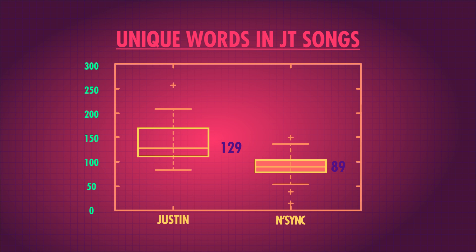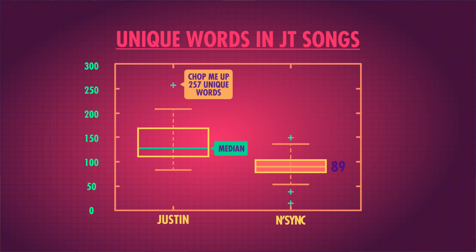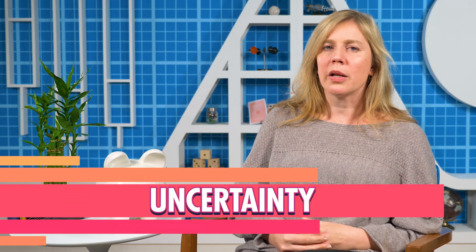The boxplot also shows some potential outliers, shown by points outside the fences. Let's look at a song marked as a potential outlier in the Justin Timberlake boxplot — the song is Chop Me Up, and it has 257 unique words, which is a lot since the median is 129. It's definitely outside the fences. We don't want to throw out data just because it's extreme, and Chop Me Up isn't part of some super-experimental Christmas album, so it's hard to tell if this is a valid data point. To get around this uncertainty, we apply our preset rule. There isn't one set rule for handling extreme values — for now, we'll use our boxplot method and get rid of the Chop Me Up data because it's outside the fences. Statistics is all about uncertainty.